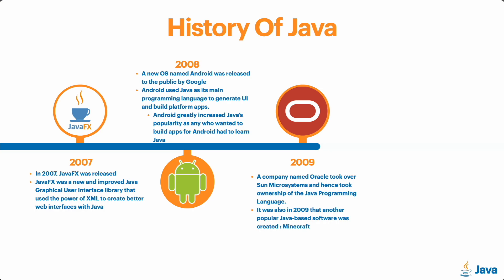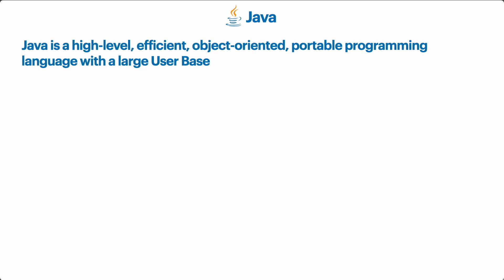Now that we know how Java was created and how it has developed over the years, let's take a look at a technical definition of what Java is — what makes Java unique from other programming languages and what are some of Java's key features. The technical definition is: Java is a high-level, efficient, object-oriented, portable programming language with a large user base. Don't worry if you don't understand it at first glance, as we'll be breaking this definition down so we can better understand it.